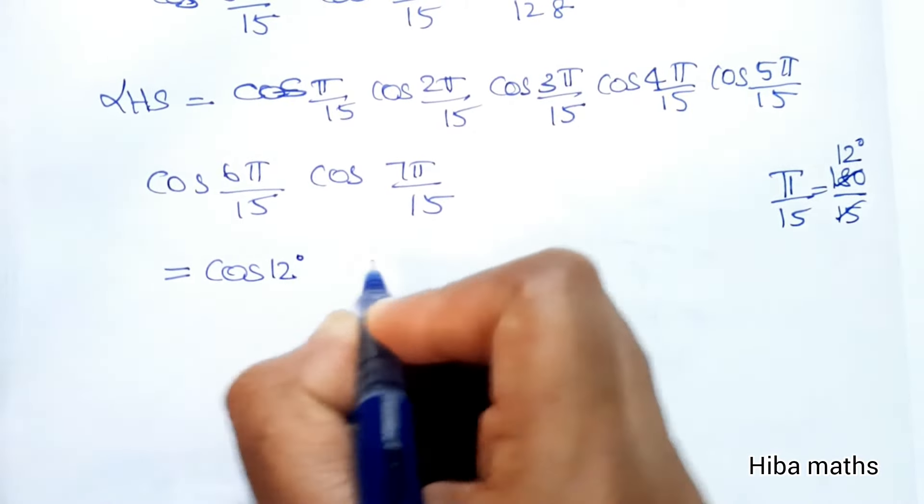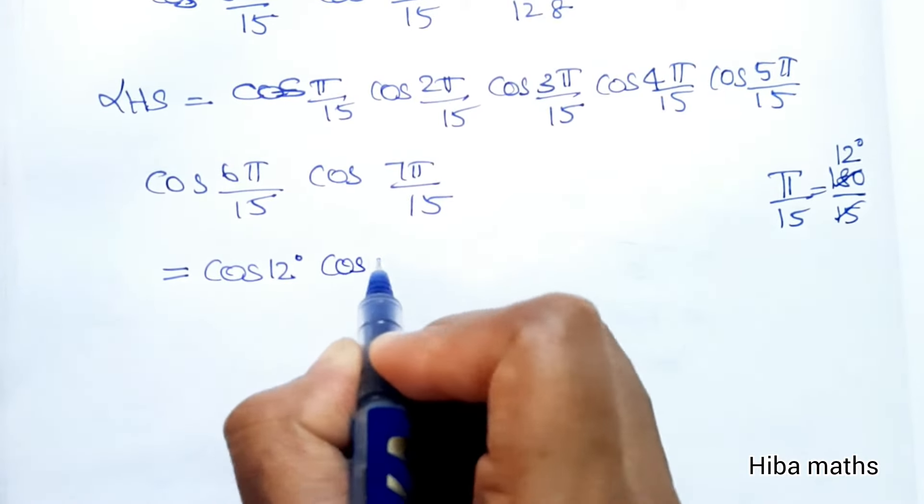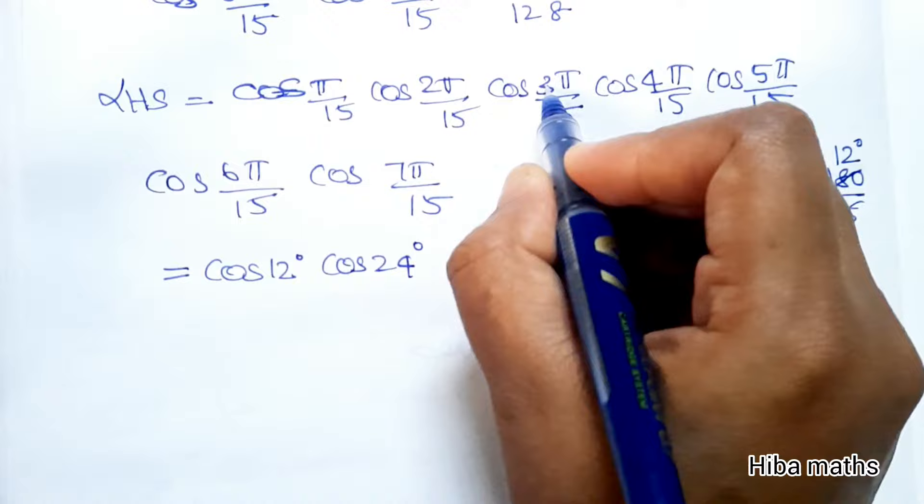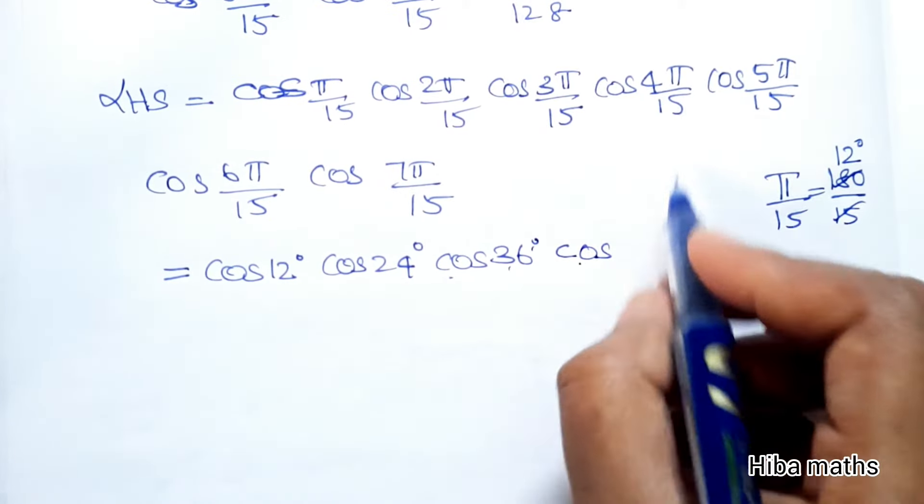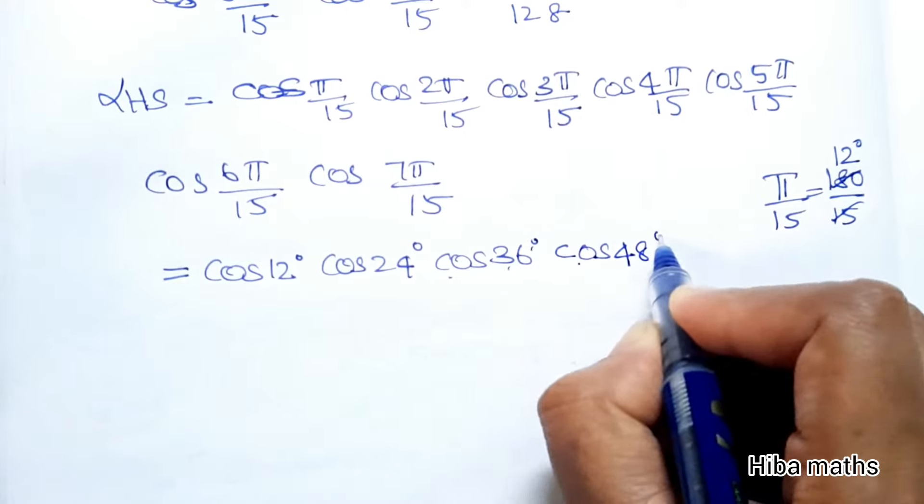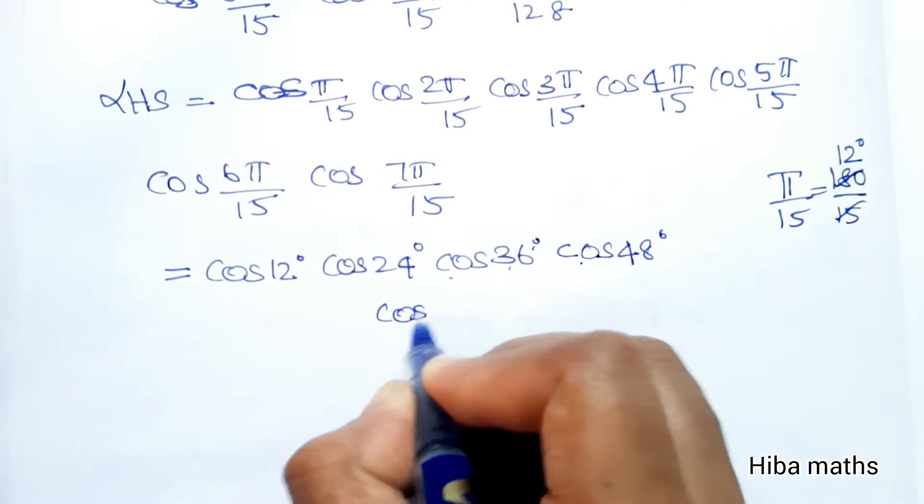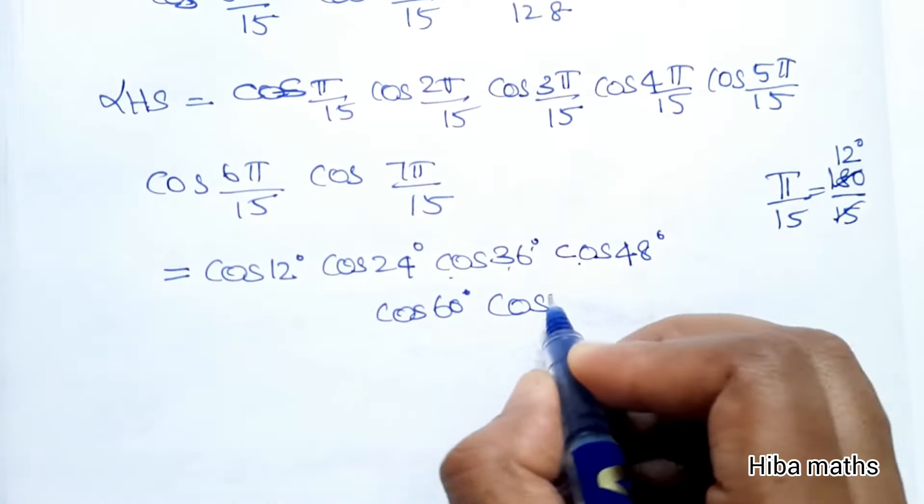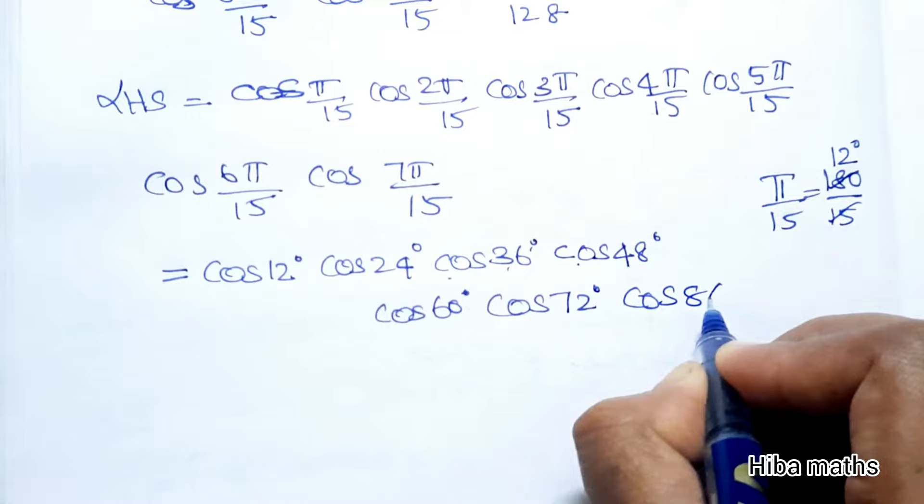Writing out the degrees: cos(12°), cos(2π/15) is cos(24°), cos(3π/15) is cos(36°), cos(4π/15) is cos(48°), cos(5π/15) is cos(60°), cos(6π/15) is cos(72°), and cos(7π/15) is cos(84°).